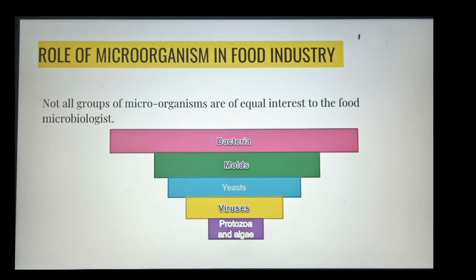When we talk about microorganisms, not all groups of microorganisms are of equal interest to food microbiology. Bacteria come very much on top of the list, with molds and yeast of considerable importance and viruses less so. Protozoa and algae have minimum direct impact on the production, processing, and consumption of food.